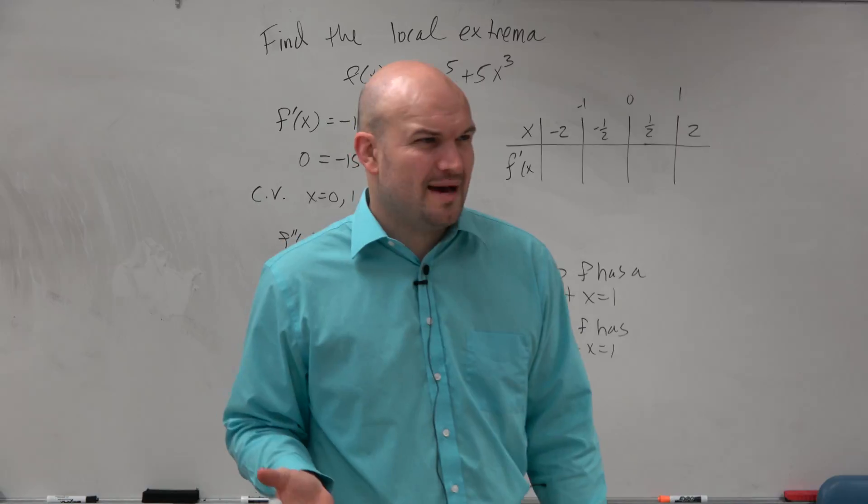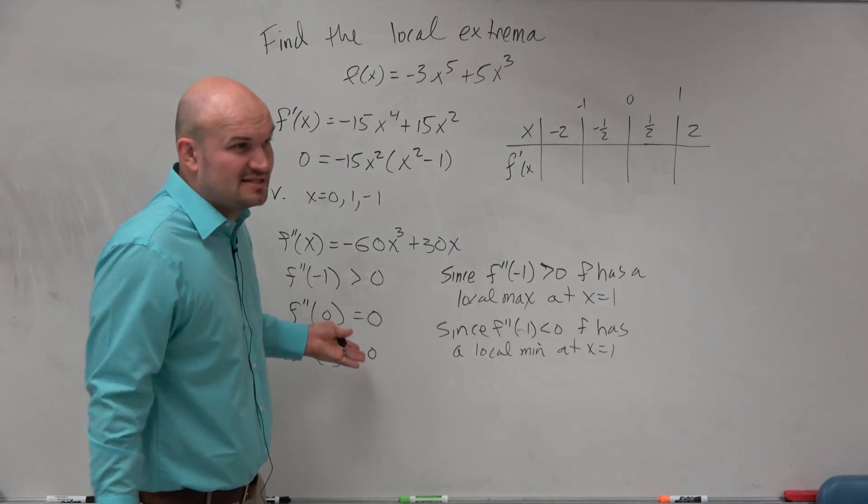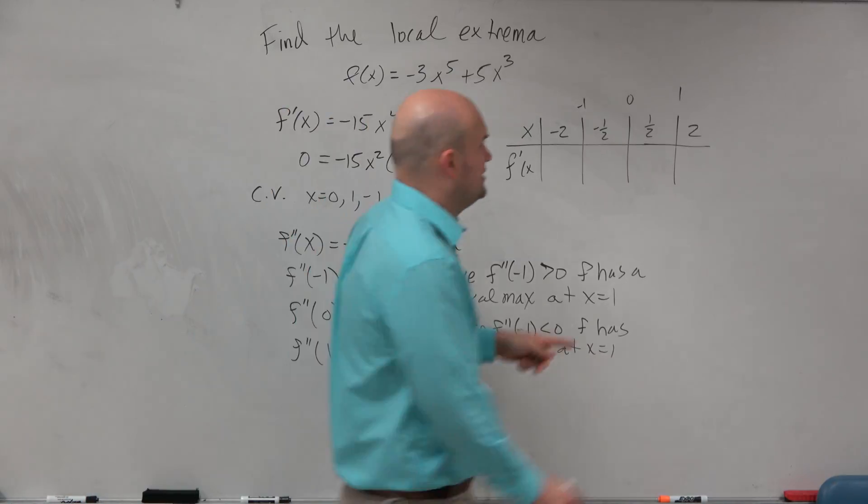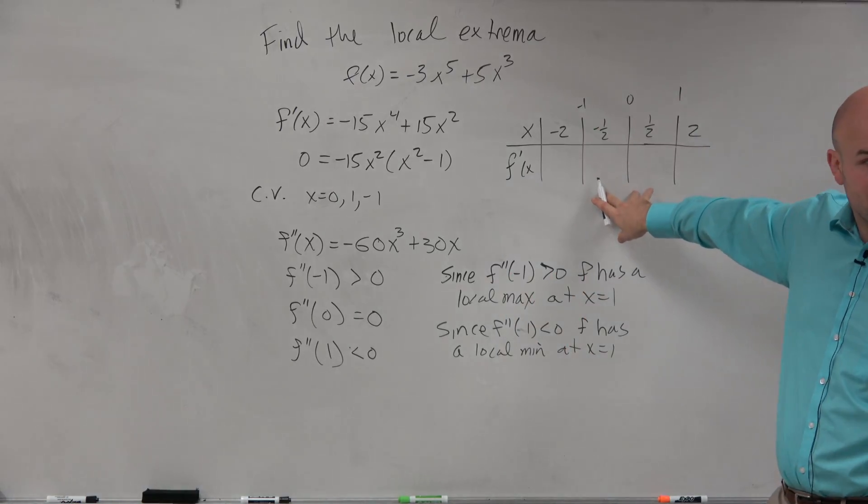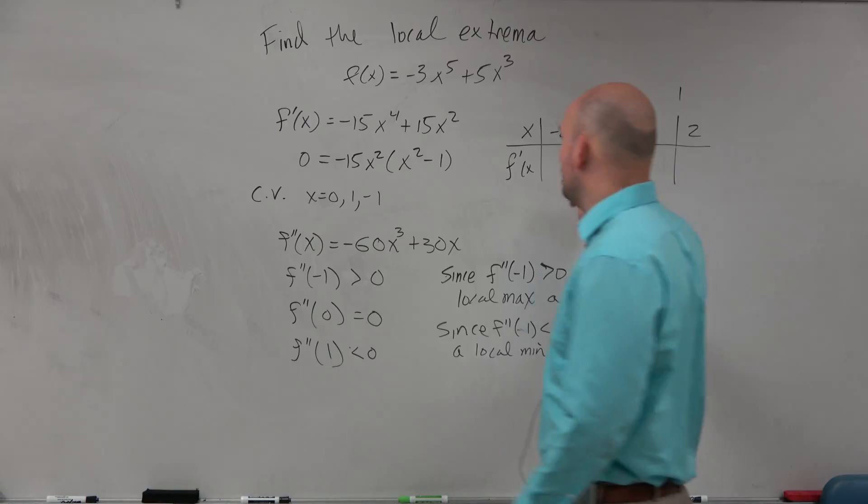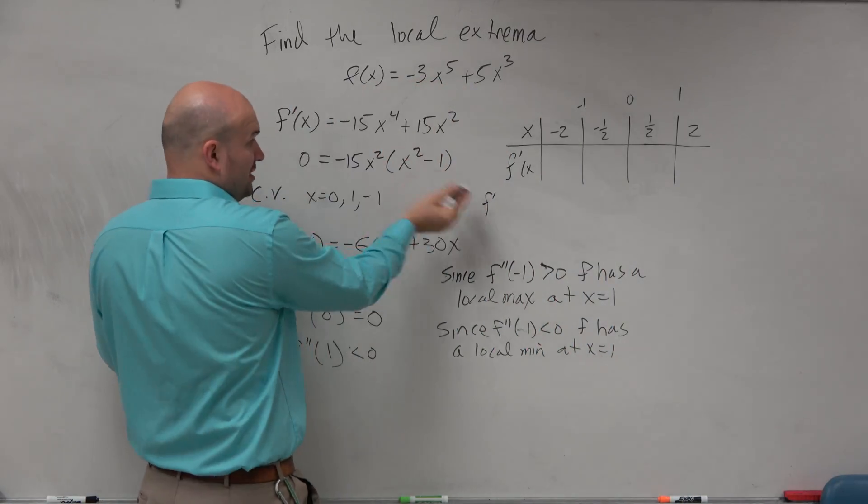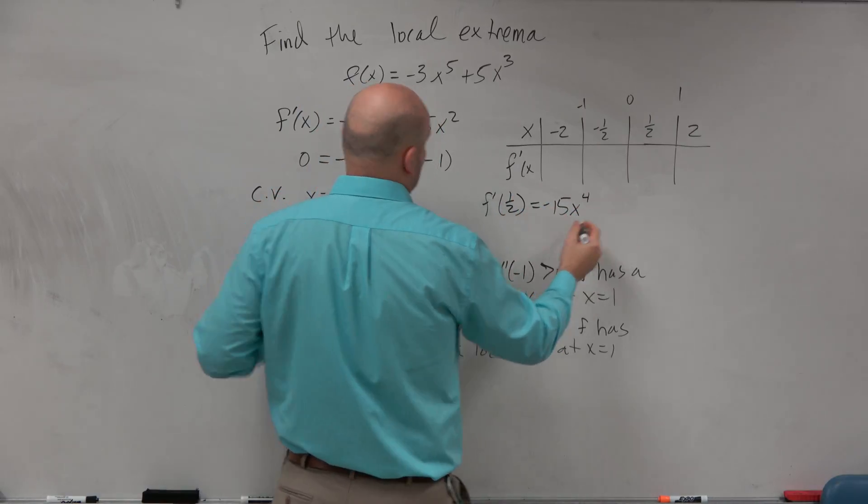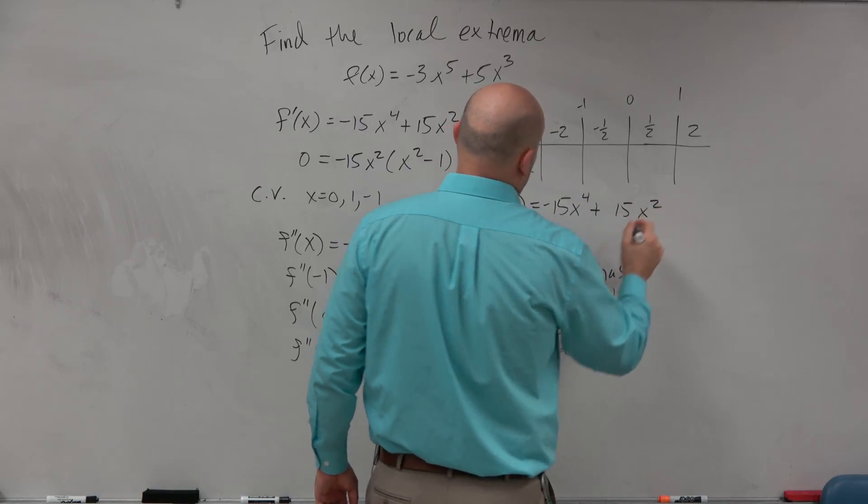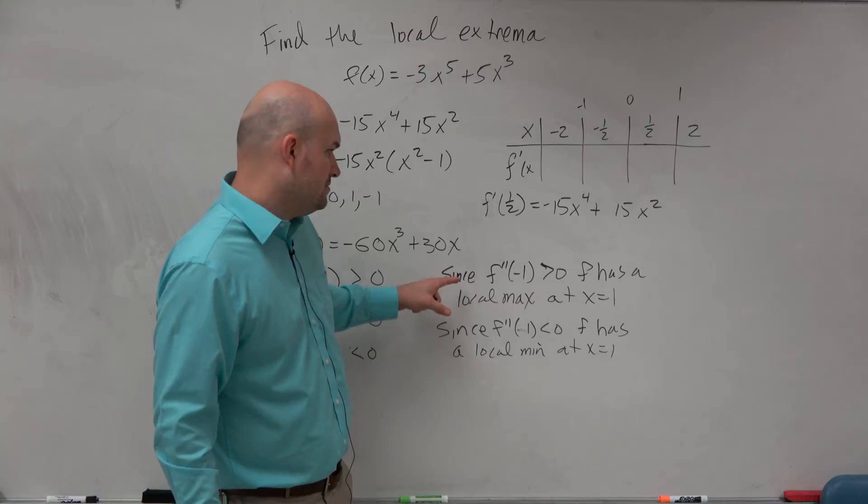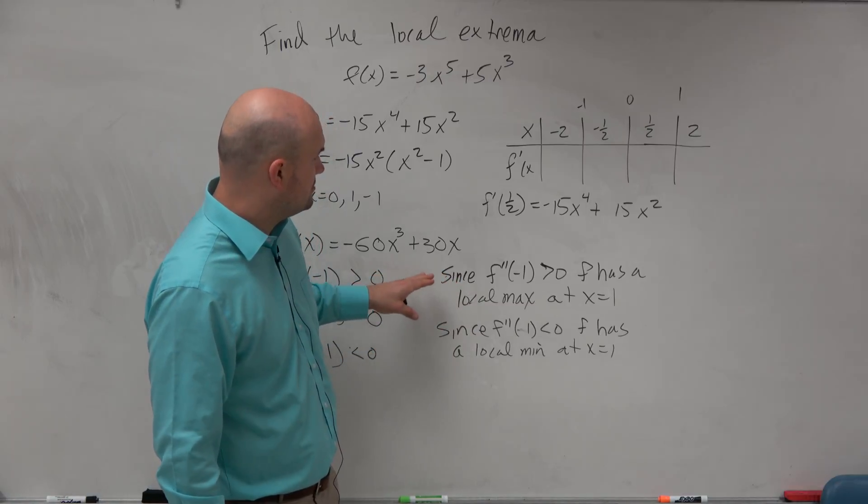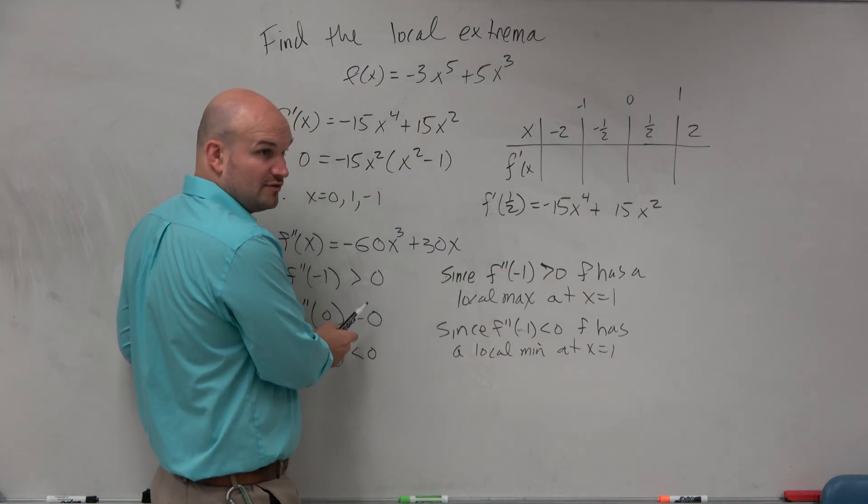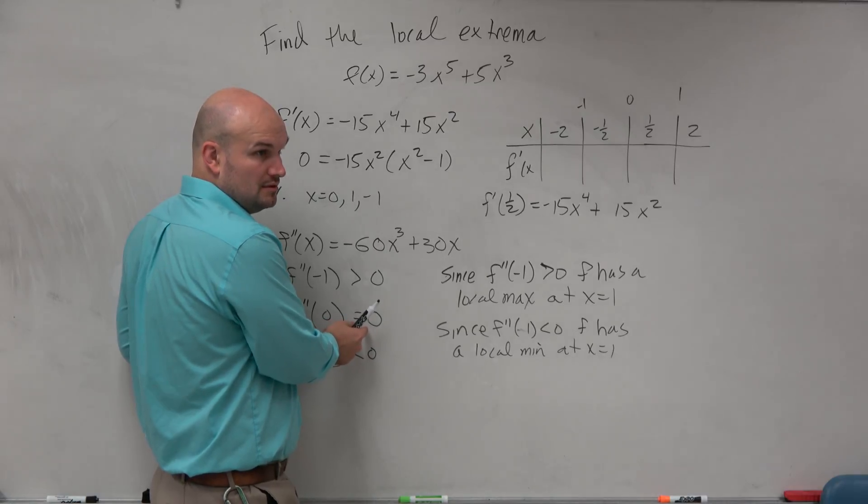Now what about 0? What's happening? Do we have a max or a min at 0? Well, the second derivative test doesn't tell us that. It just says you can't determine what is happening at 0 with the second derivative test. So we're going to actually have to go back here and determine if the signs are changing. I'm going back to the first derivative test. The second derivative test doesn't work for 0 because it's equal to 0.